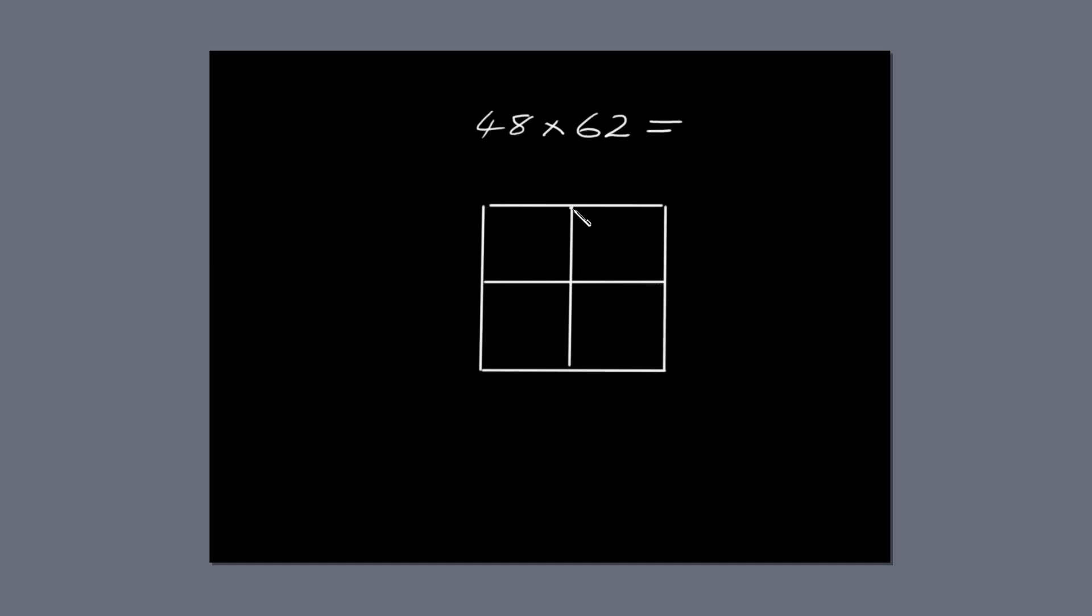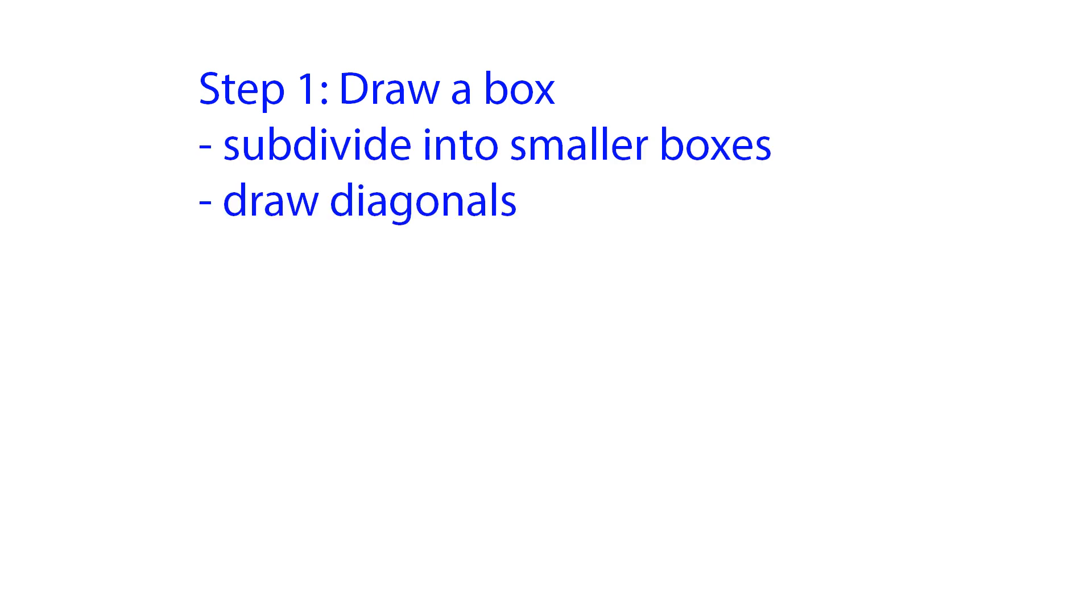Next, draw a diagonal line through each of the four small boxes. You might find you can draw a diagonal through more than one of the smaller boxes at a time. That's step one. Draw a box, subdivide it into smaller boxes, and draw diagonals through them.